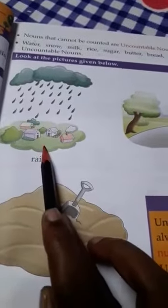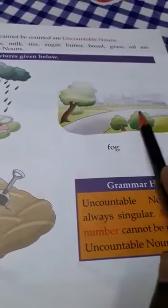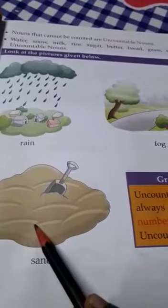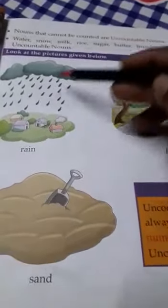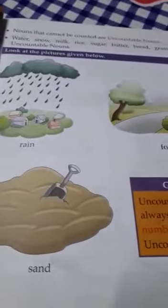If I give you butter, are you able to count it like 1, 2, 3, 4? No, you are not able to count butter, so butter is an uncountable noun. Oil — are you able to count? No, oil is also an uncountable noun. Rain — can you count? No. Fog — can you count? No. Sand — are you able to count? No. We are not able to count these things, so these all are uncountable nouns.